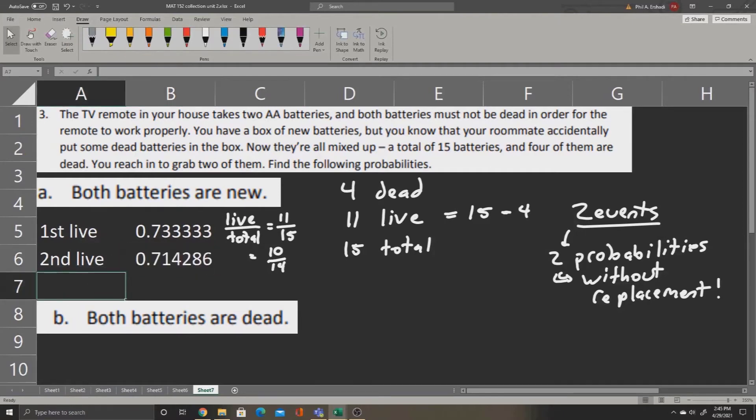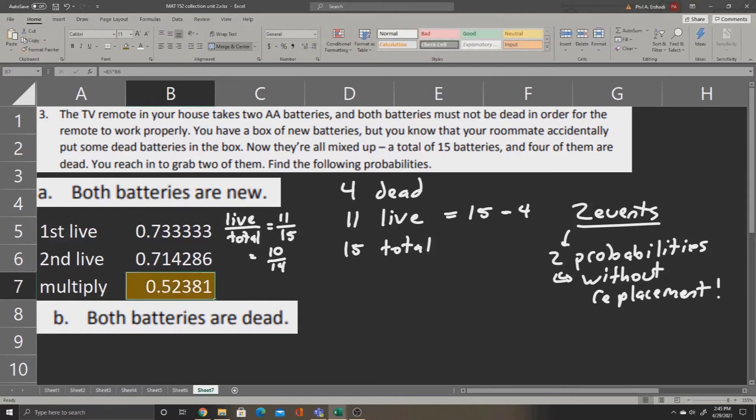Now to find the overall probability of both events happening in a row, we just multiply. We'll take the first probability, multiply by the second probability. This will give us 0.52381 probability that both batteries will be alive. Paint this gold, and we'll reduce the number of decimal places.